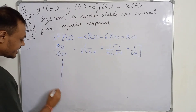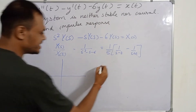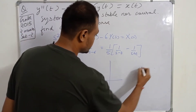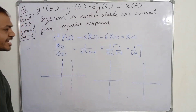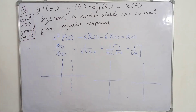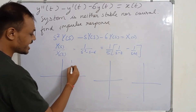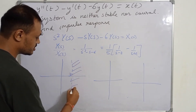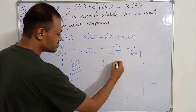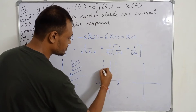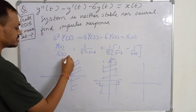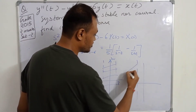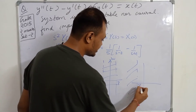We have the following three possible conditions for the ROC. The poles are at minus 2 and plus 3. The ROC can be to the right of the rightmost pole (right of s=3), between the two poles (between s=-2 and s=3), or to the left of the leftmost pole (left of s=-2). This is the j-omega axis.